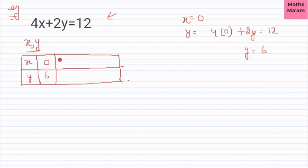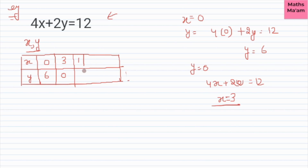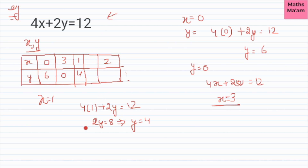If y equals 0, substituting into the equation gives x equals 3. If x equals 1, then 4 times 1 plus 2y equals 12, so 2y equals 8, giving y equals 4. If x equals 2, then 4 times 2 plus 2y equals 12, so 2y equals 4, giving y equals 2.